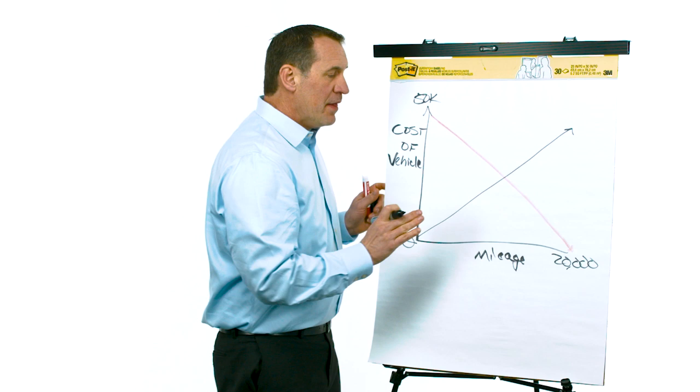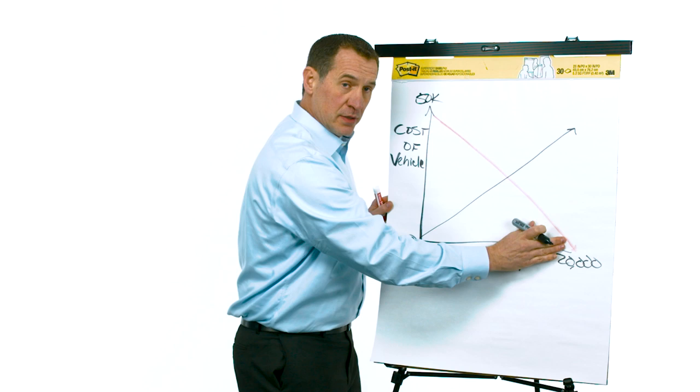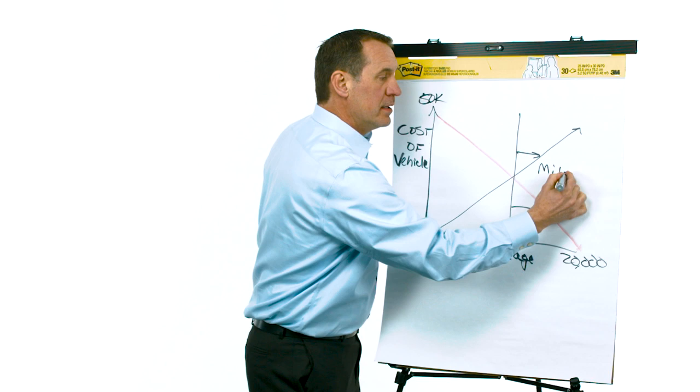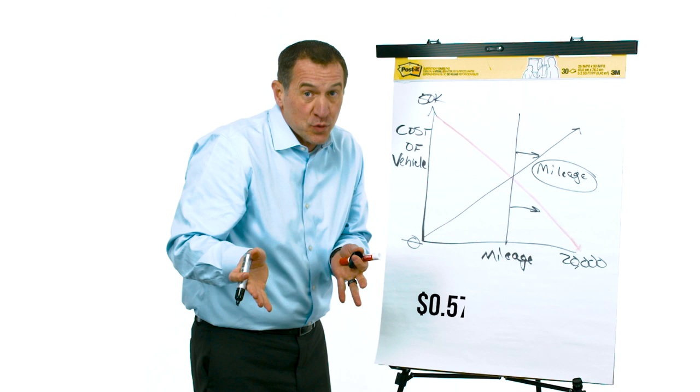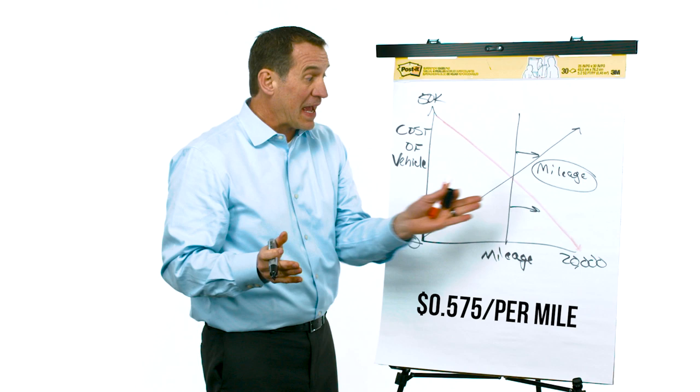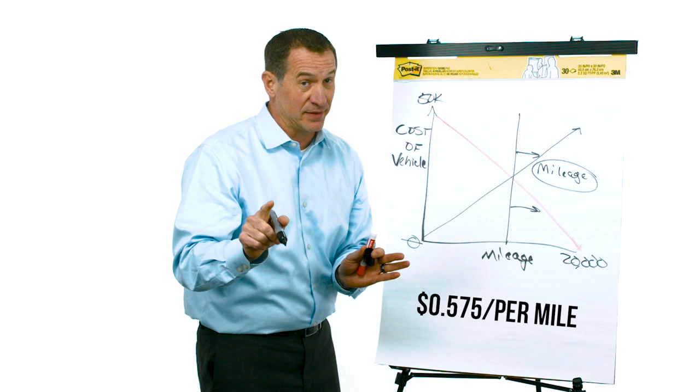The higher the mileage and the lower the cost, I want to do a mileage method. Because think about it: if I'm gonna try to write it off over time and I'm gonna burn 20,000 miles a year, and the mileage this year in 2020 is 57 and a half cents per mile, I mean that's over a $10,000 write-off in that year.